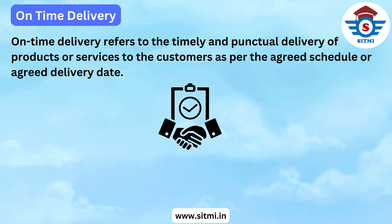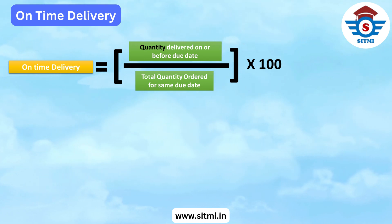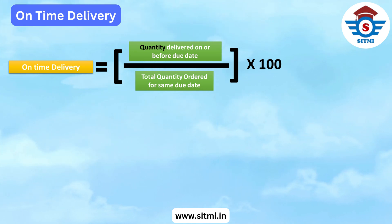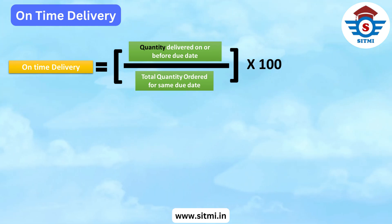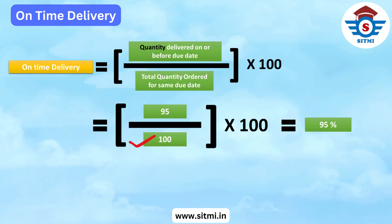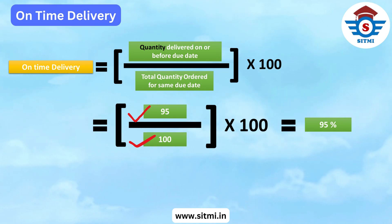The formula for calculating On Time Delivery is: quantity delivered on or before due date, divided by total quantity ordered for that same due date, multiplied by 100. For example, if a customer ordered 100 units and we could deliver only 95 units on the agreed delivery date, then the On Time Delivery performance is 95%.